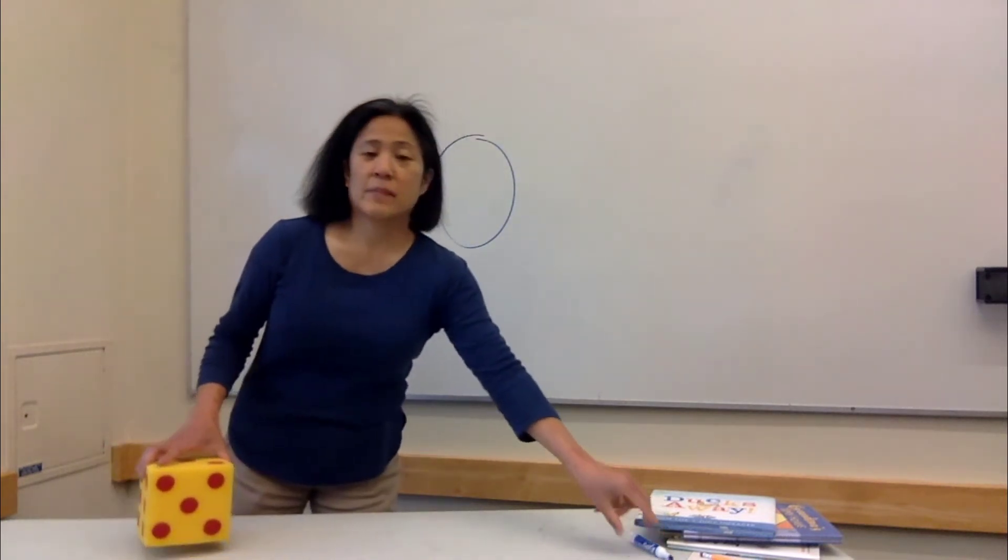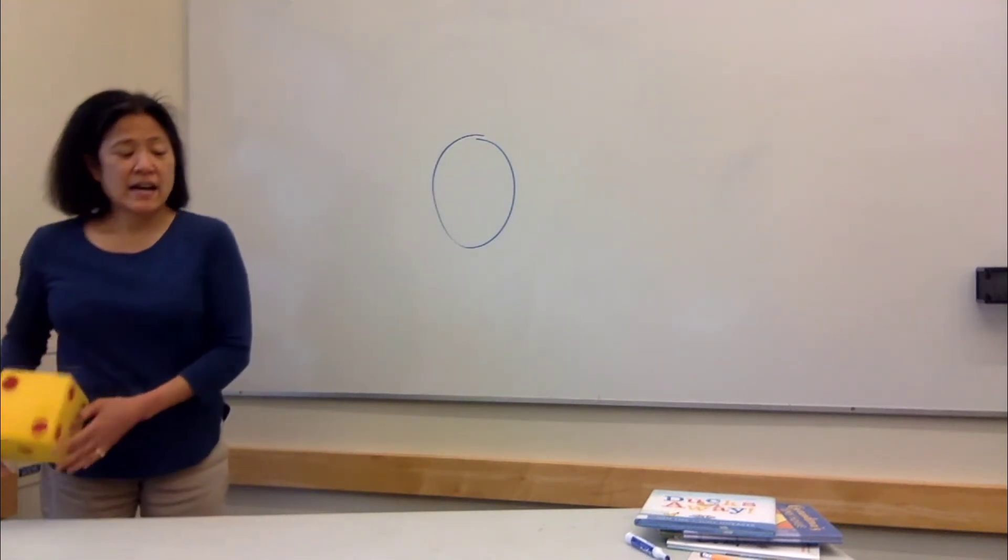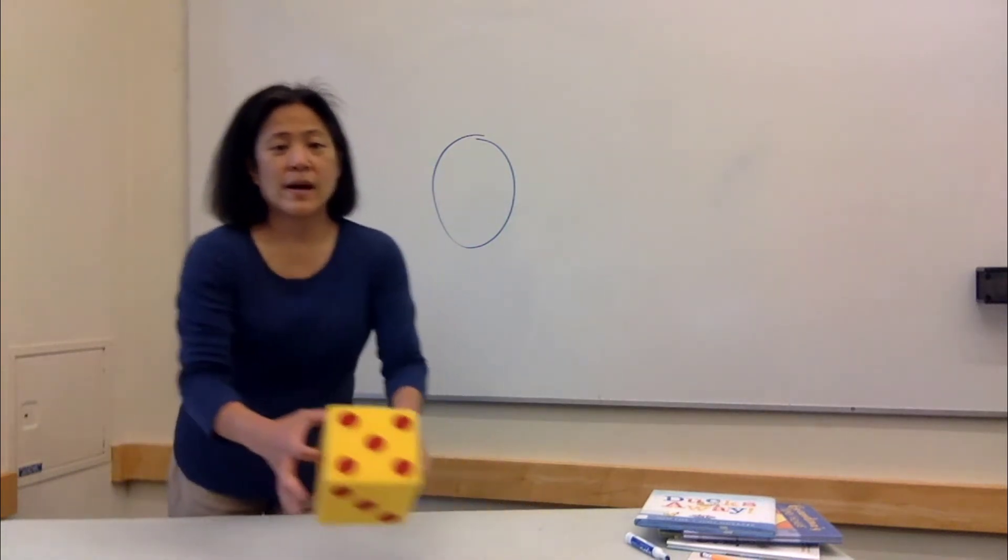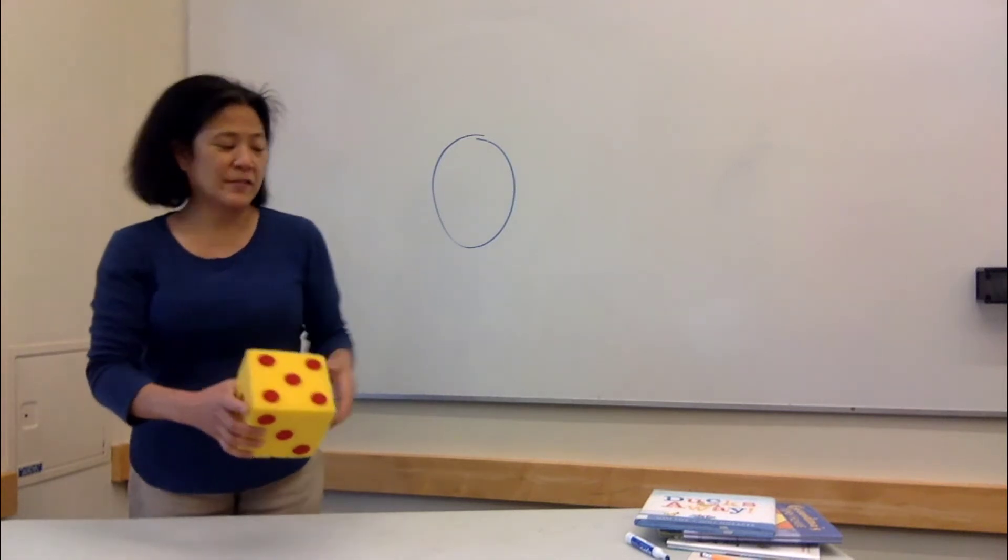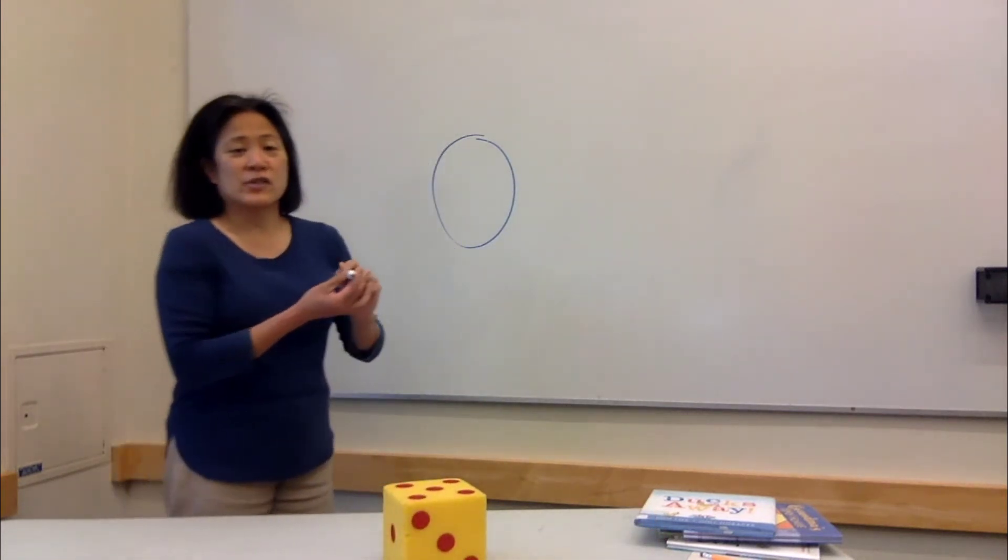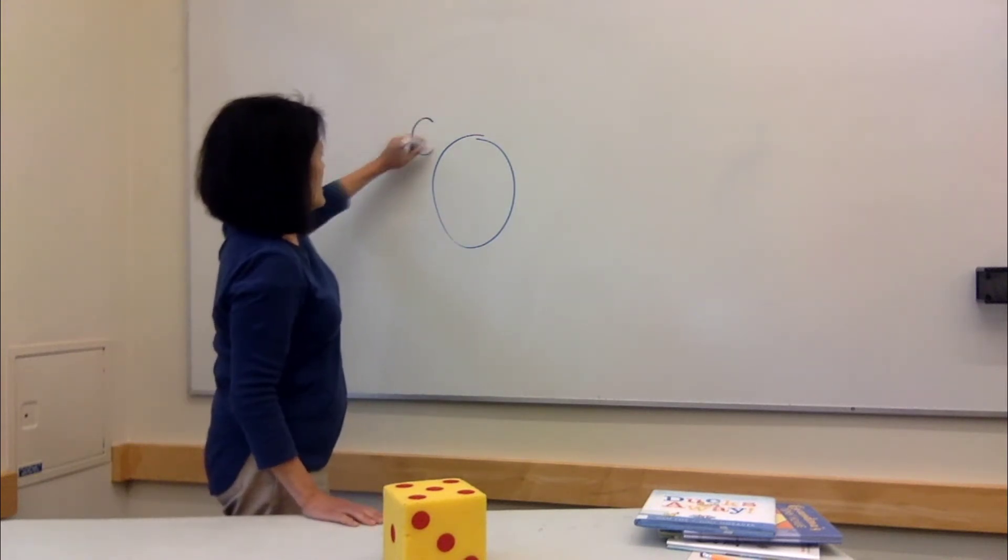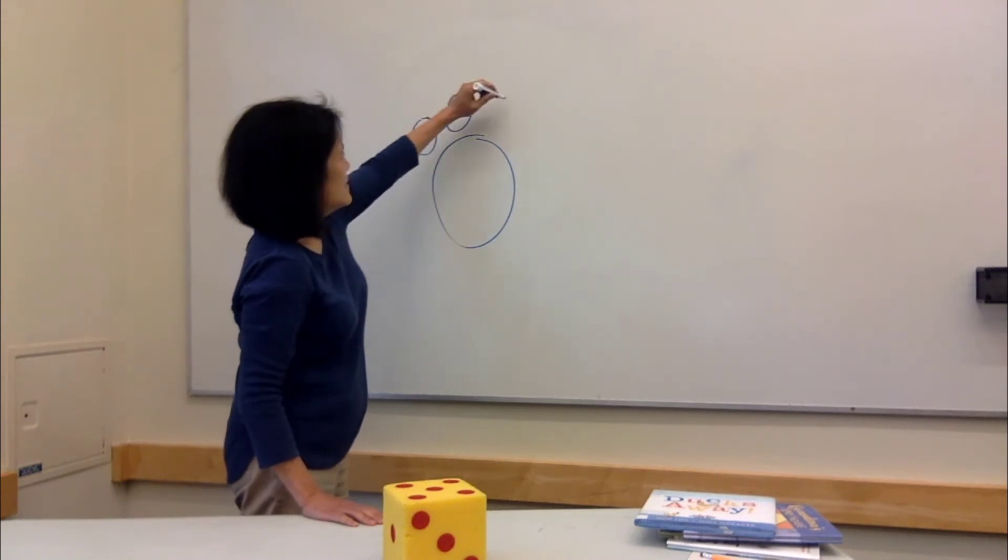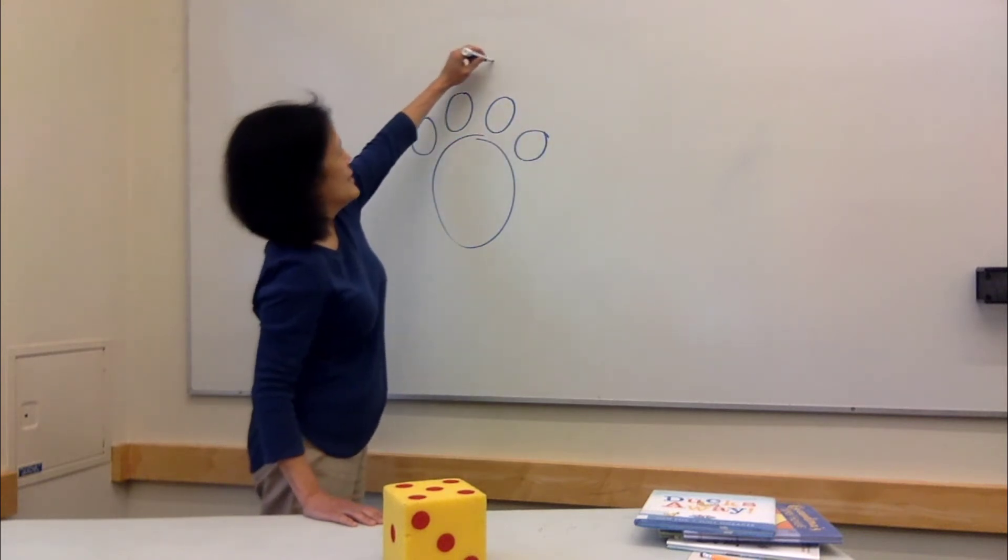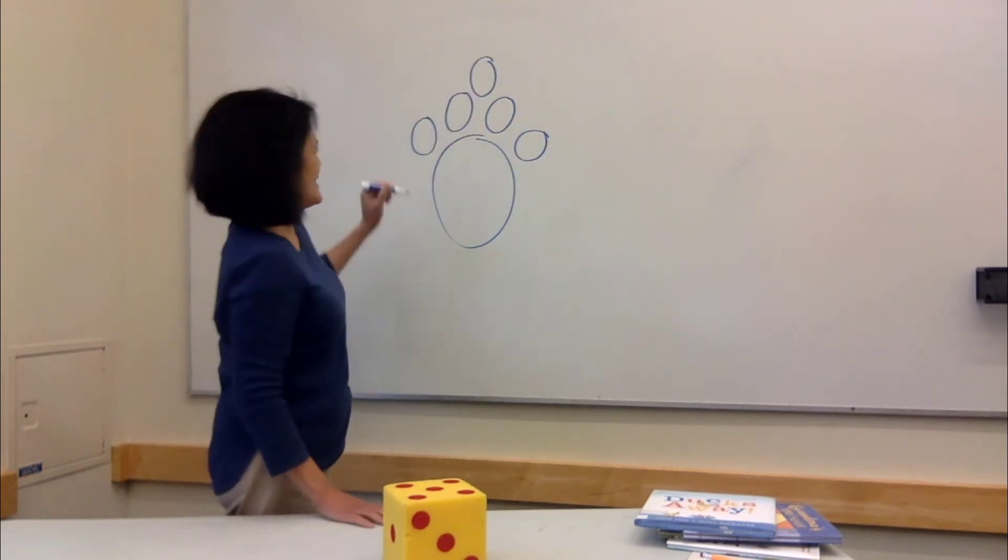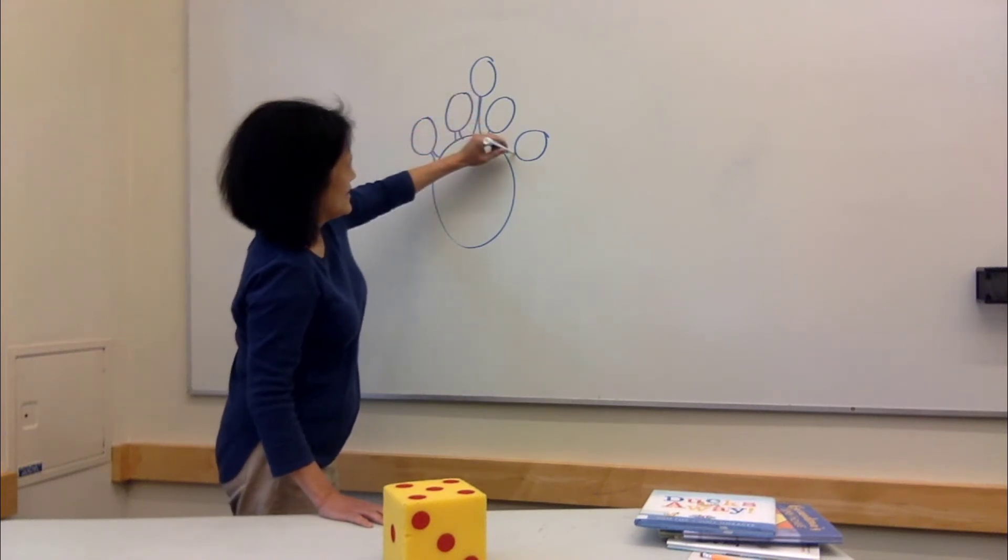And then pick a body part like heads. And we roll the die to see how many heads are in our Crazy Critter. Wow, five dots, five heads. One, two, three, four, five. And then you draw in the five heads, encourage your child to count them along with you as you draw. So here's one head, two, three, four, and five. Five heads. I'll just add some necks on there.